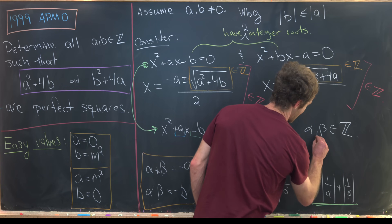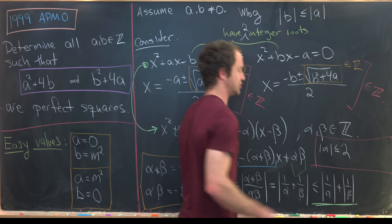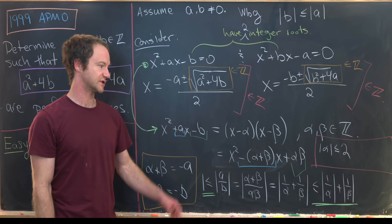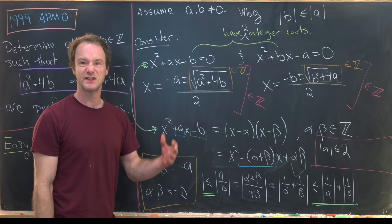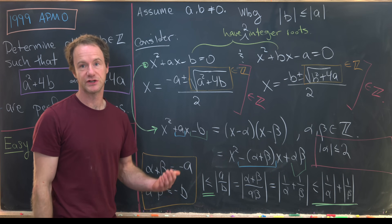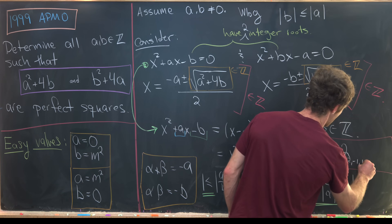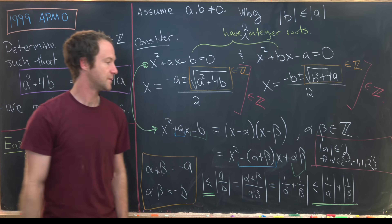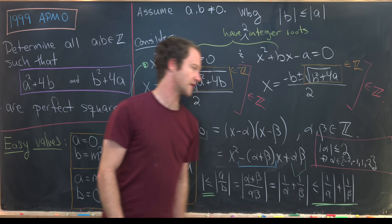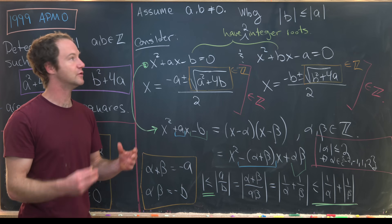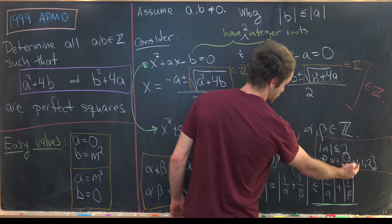So we conclude that the absolute value of alpha is at most 2, or the absolute value of beta is at most 2 — possibly both. Since we haven't strictly named them, we pick alpha to be the one with absolute value at most 2. That means alpha comes from the set {-2, -1, 1, 2}. The two important pieces of information going forward are: alpha plus beta equals negative a, alpha times beta equals negative b, and alpha is in that set.